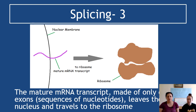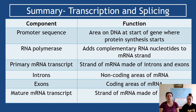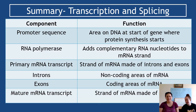The mature transcript — now finished and made up only of coding exons — leaves the nucleus and goes to the ribosome, where the next stage, translation, will happen. To summarize: the promoter sequence is the start signal on the gene; RNA polymerase adds complementary RNA nucleotides to form the mRNA strand; the primary mRNA transcript contains introns and exons; introns are non-coding and remain in the nucleus; exons are coding regions; and the mature mRNA transcript is made only of exons.